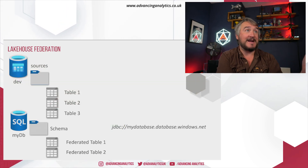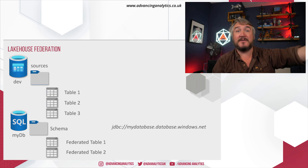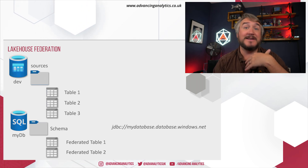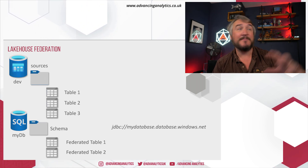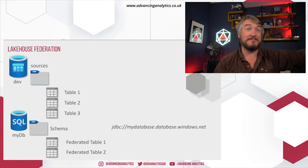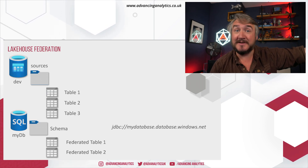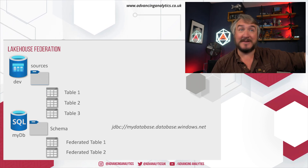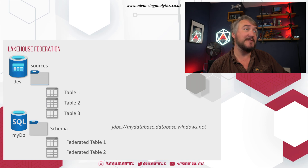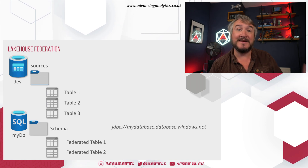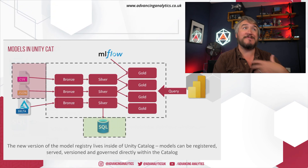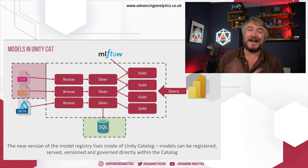Lakehouse Federation colors in that box, making external sources appear as if they're just part of our catalog. If I go into my catalog, I'll have internal catalogs containing Unity Catalog delta tables, and I'll have a foreign catalog pointing at a SQL Server, listing the schemas and tables inside it — and I can just treat it as if it's the same. It's bringing these different aspects together.